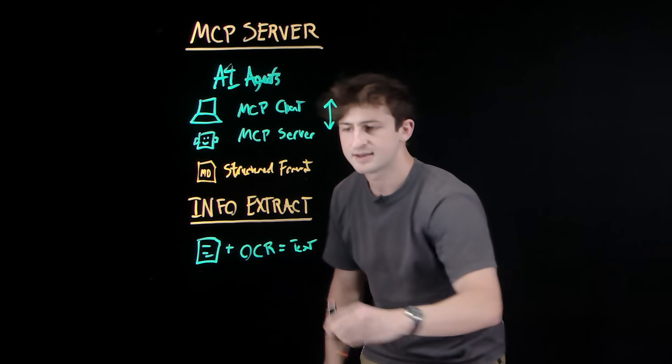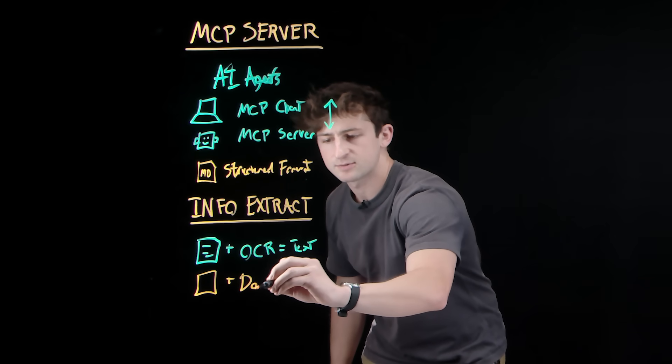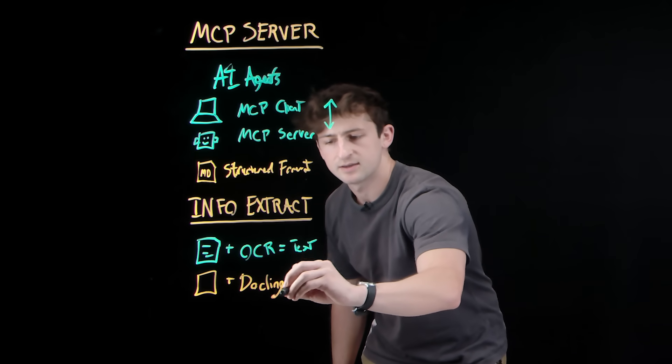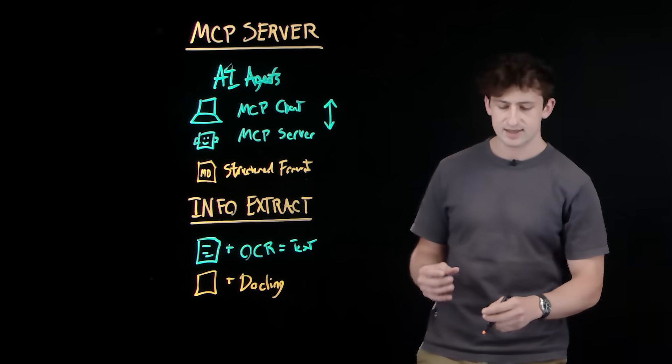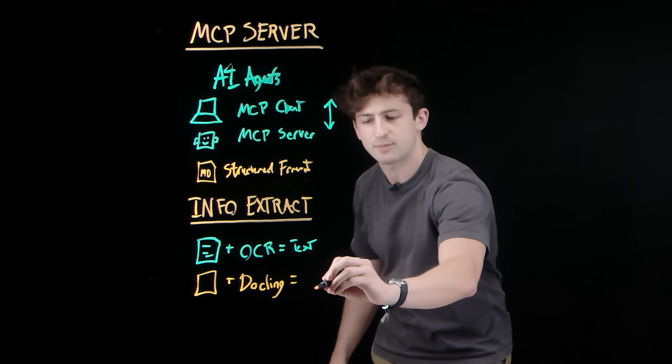But when we combine that same document with Dockling, we get the hierarchy of the actual document. So what we're able to do is be able to have a structured output.